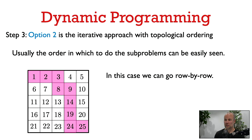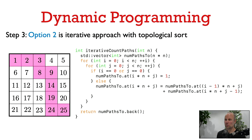In this case, we can just go row by row — first solving paths to 0,0, then 0,1, then 0,2, etc. The numbers in the table show the order in which we should solve the subproblems. With this ordering, when we get to any cell, we've already solved the subproblem for the cell to the left and the cell above it.